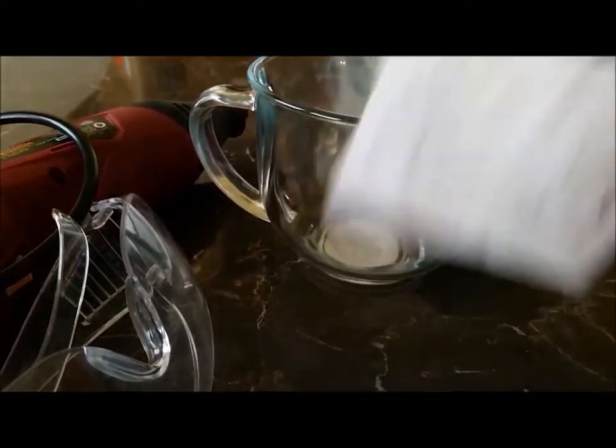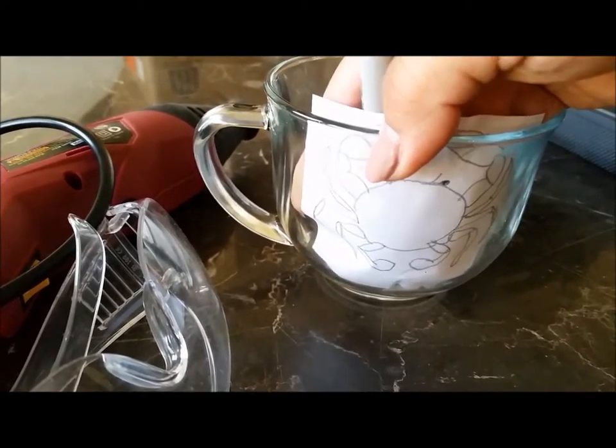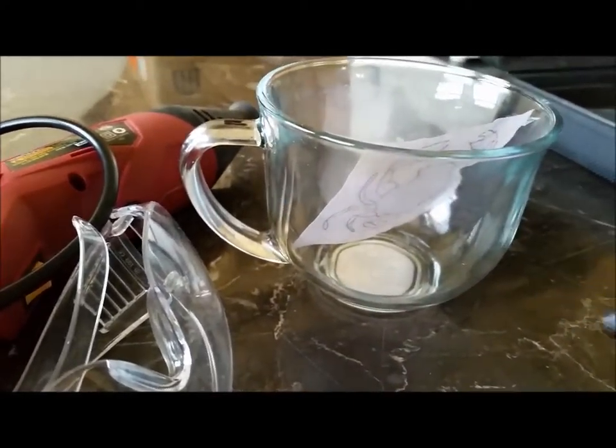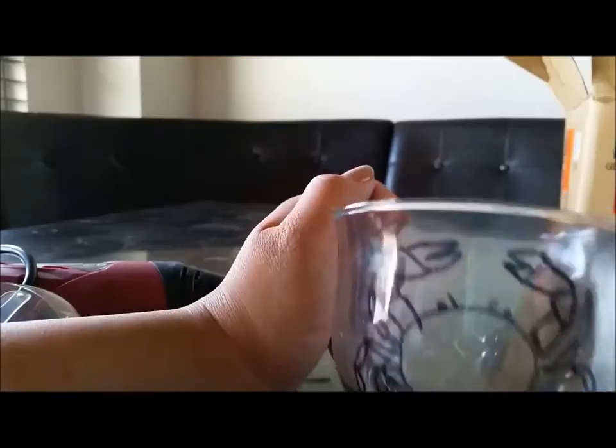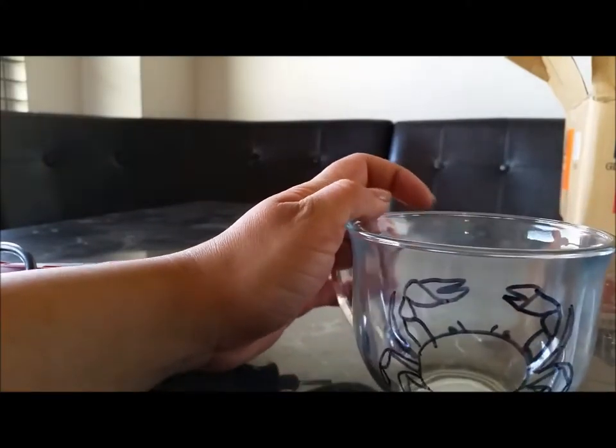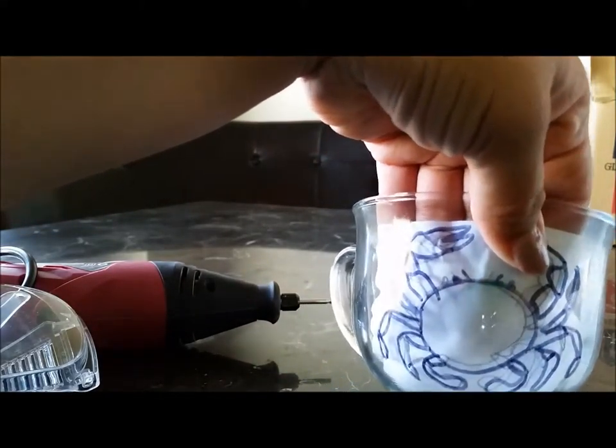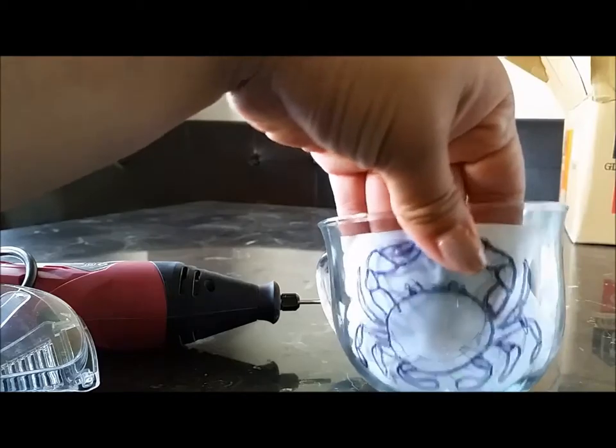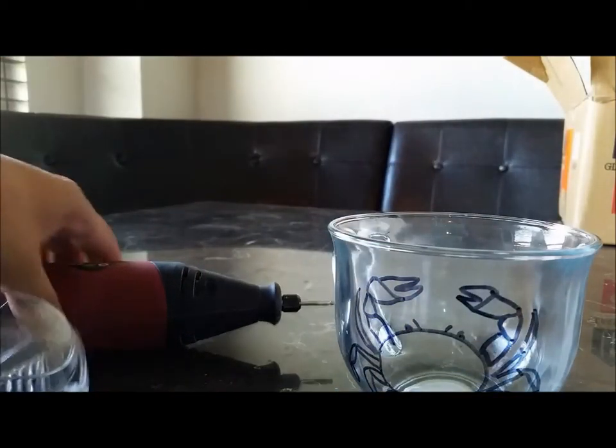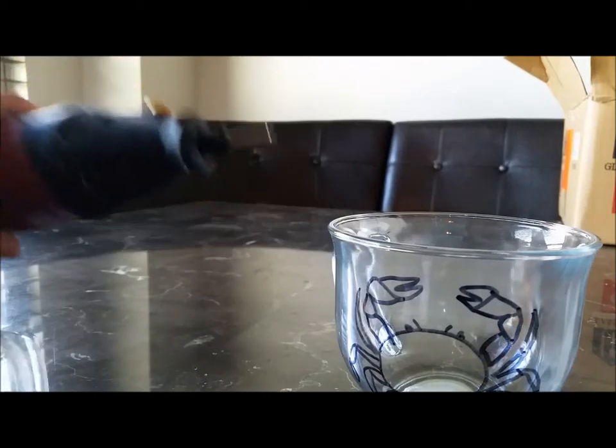Anyway, so here you go. I got my image. I'm going to stick it in here. I'm going to hold the image with one hand, and with the other, I'm going to trace it. Alright, so here is the image that I drew or traced. Just going in there and tracing it with the permanent marker, and then we're going to go and use this Dremel to actually do our etching.